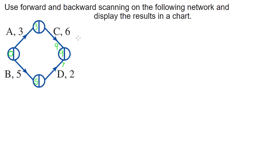Backward scanning works from the end node backwards. We start with whatever number the project finishes at and work backwards to find the latest start time of each activity. Looking at D: I take the nine and subtract how long D takes. If I can wait until minute nine to finish D, I can start D two minutes earlier — nine minus two gives me seven. So I can start D at minute seven and still finish by minute nine.